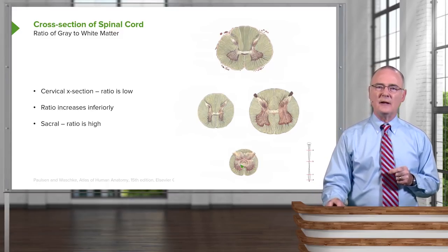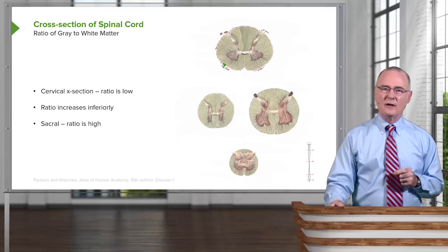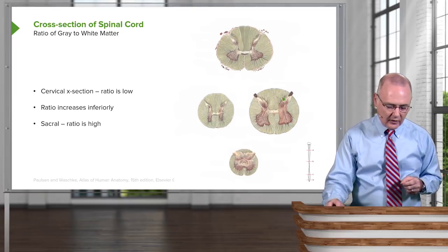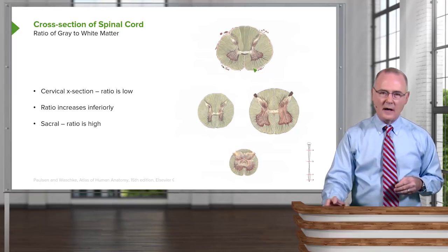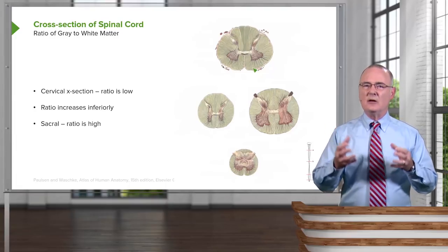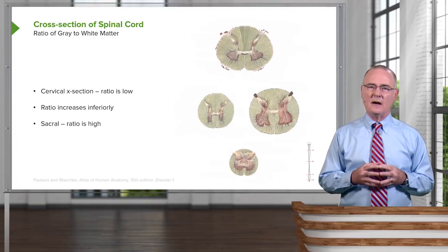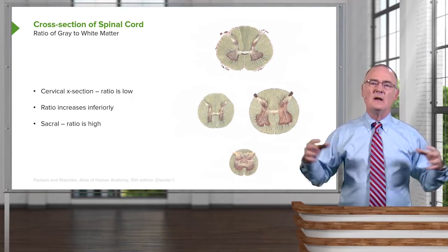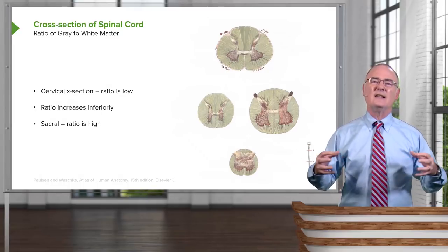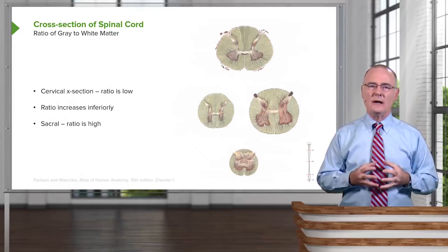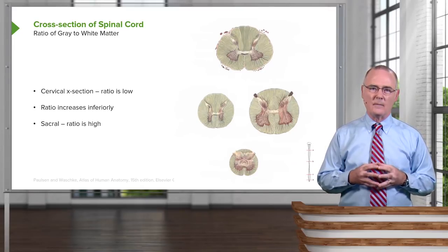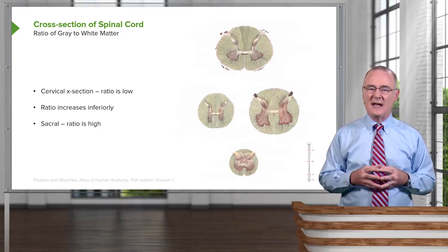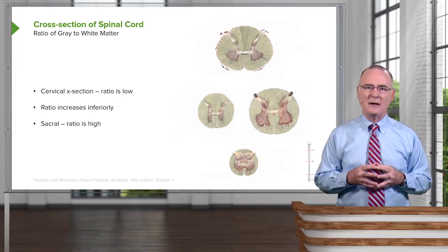The rationale for this is that by the time you get to the cervical area, descending and ascending tracts coming from much lower levels of the spinal cord are being joined by ascending and descending pathways responsible for conveying information from the upper aspects of the body. So you have a lot more ascending and descending traffic in the more superior axial sections of the cord, and the white matter starts to overwhelm the amount of gray matter in the upper levels of the spinal cord.